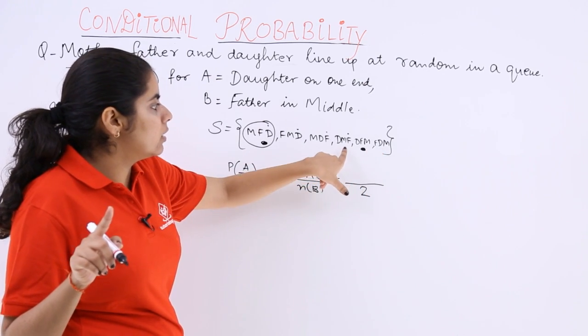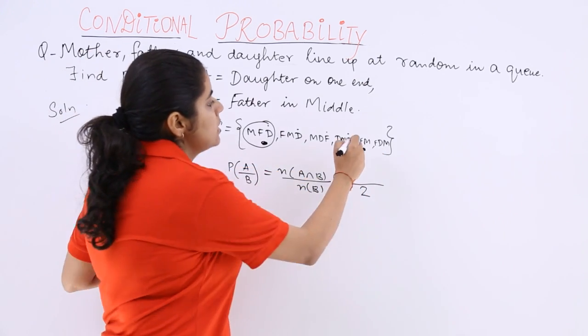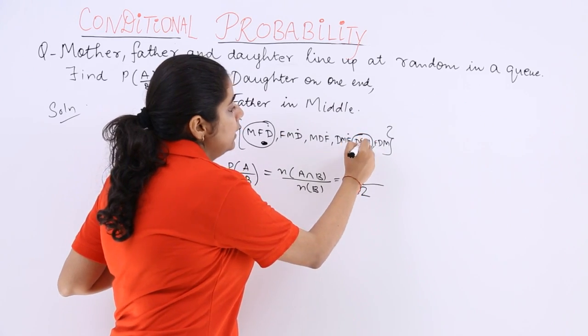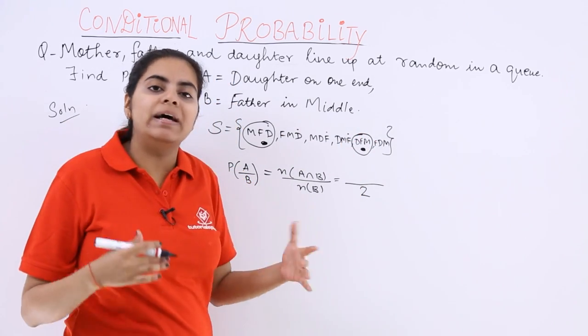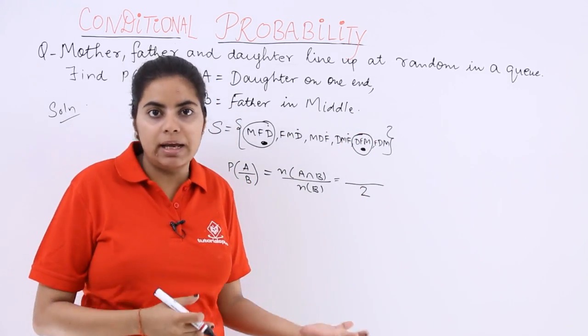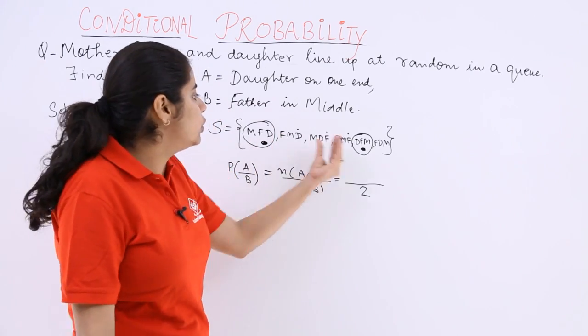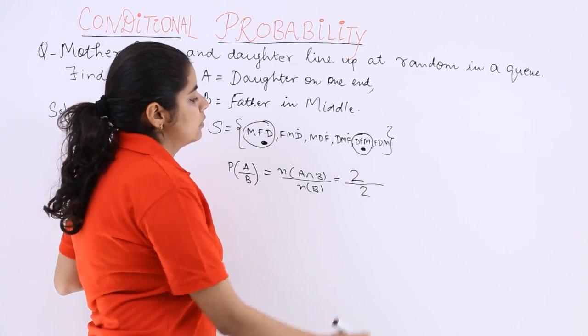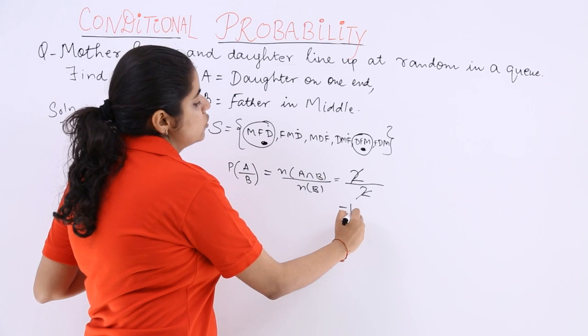Then this is the case where daughter is again on one end and father is in the middle. Because one end does not specifically mean whether right or left, so we can take both. So again 2 cases are there. So the intersection is also resulting in 2. So 2 divided by 2 is 2, so result is 1.